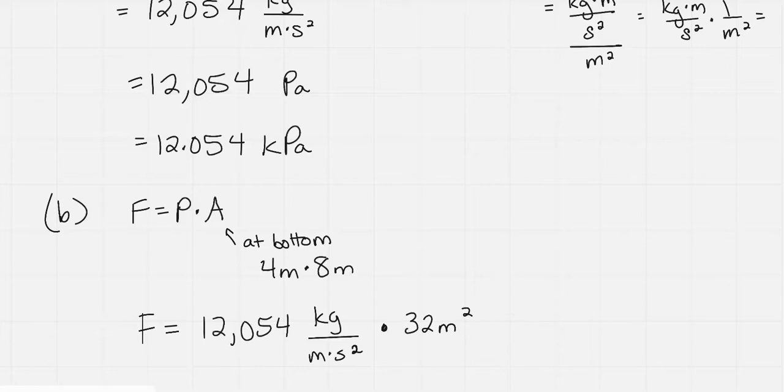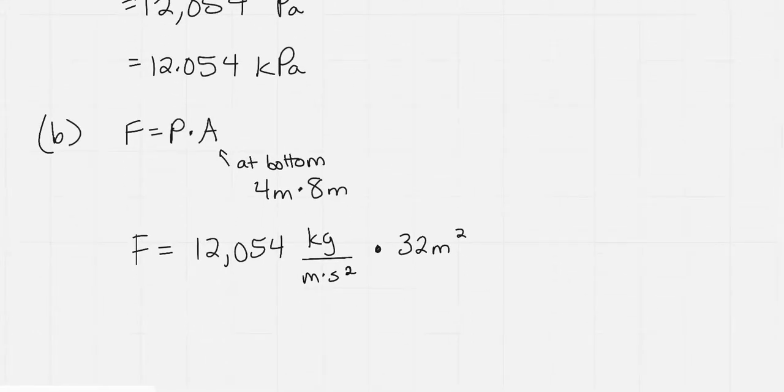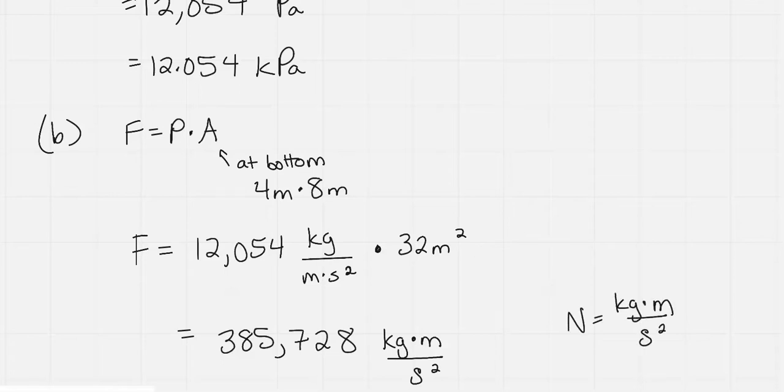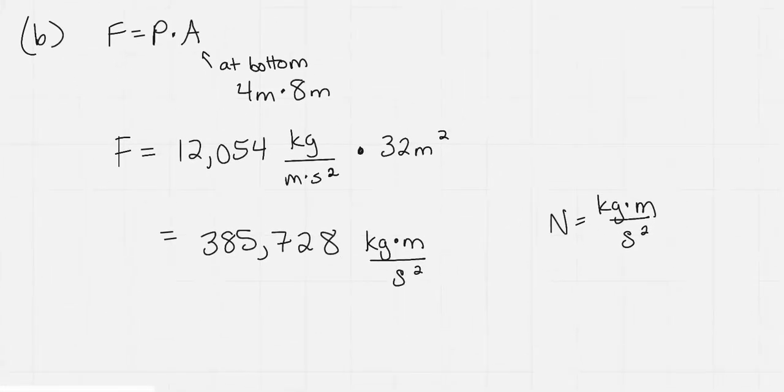So let's look at what happens to the numbers and the meters. So I got, when I multiplied this, 385,728. And notice one of the meters divides out. And so we're left with now, we have kilogram times meters per second squared. And that's what a Newton is, kilograms times meters per second squared. And so this is the force is actually 385,728 Newtons.